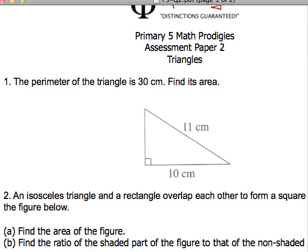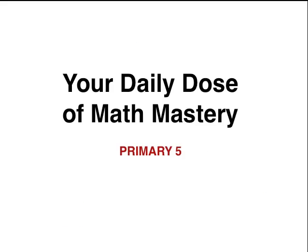The perimeter of the triangle is 30 cm. Find its area. So, let's take a look at this. 11, 10, and we don't know what one side is. So, I'm going to draw this on our little handy-dandy notebook.